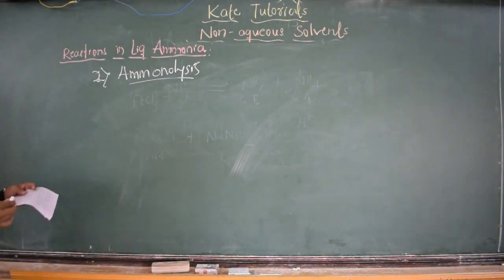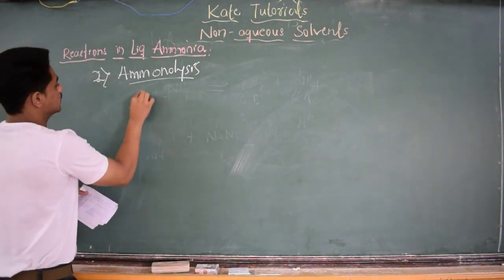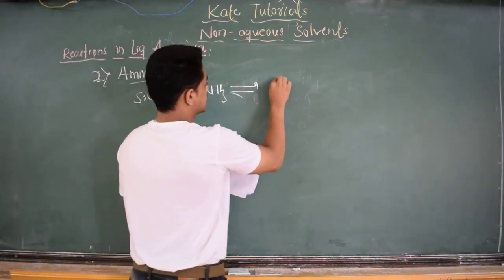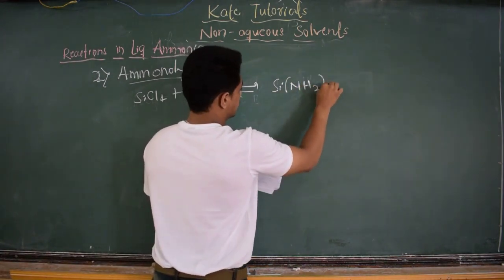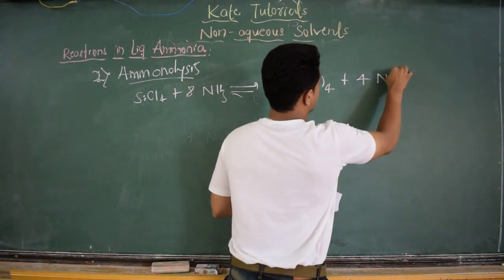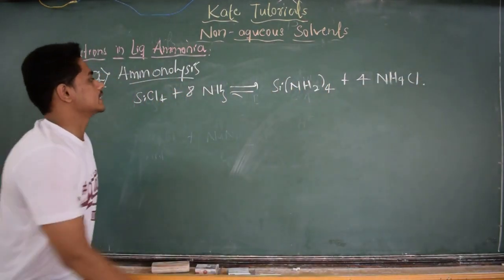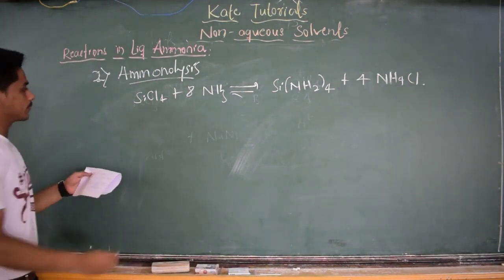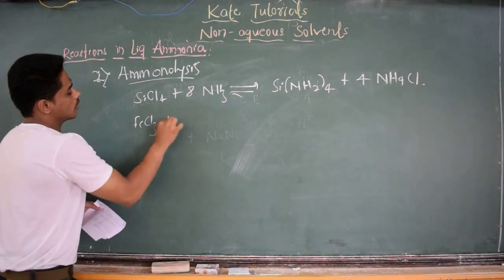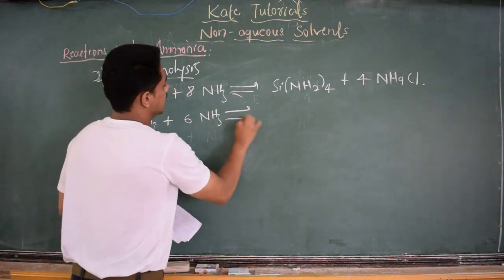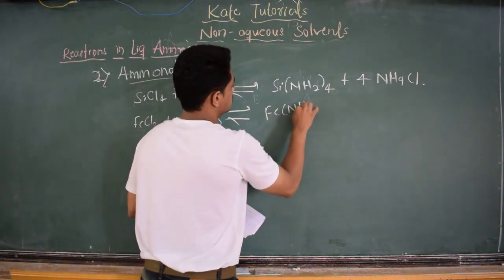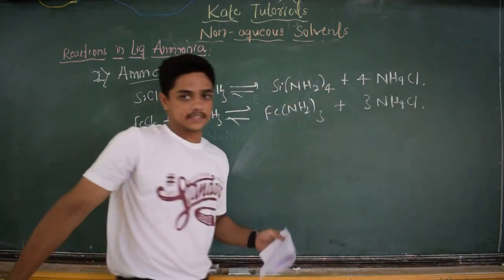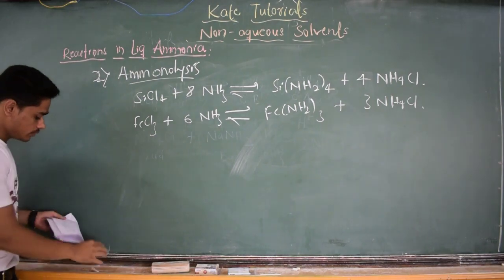If the solvent is ammonia, then it is aminolysis. For example: SiCl₄ plus 8 moles of ammonia gives Si(NH₂)₄ plus NH₄⁺ — this is aminolysis. One more example: FeCl₃ in presence of 6 moles of ammonia gives Fe(NH₂)₃ plus 3 moles of ammonium chloride (NH₄Cl). This is another reaction example for aminolysis.